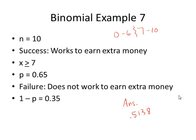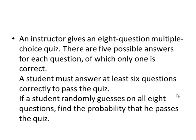We have one more binomial problem. An instructor gives an eight-question multiple-choice quiz. There are five possible answers for each question. Only one is correct. A student must answer at least six questions correctly to pass the quiz. If a student randomly guesses on all eight questions, find the probability that he passes the quiz. We know that a student needs to get at least six, x greater than or equal to six, out of eight to pass. The one thing that we don't know is the value of p, but if a student is guessing, the probability of guessing correctly is one out of five, because there are five possible answers, but only one is correct. And one-fifth is the same as the decimal point two.